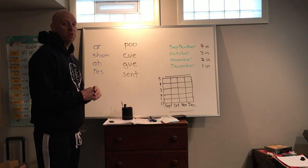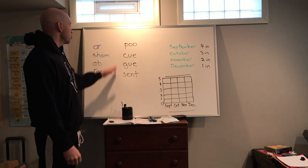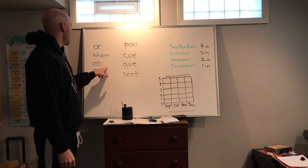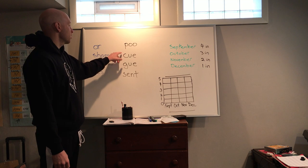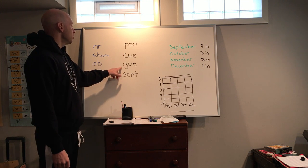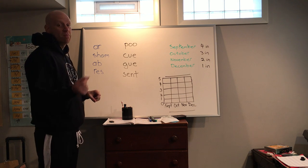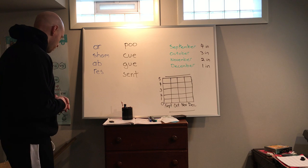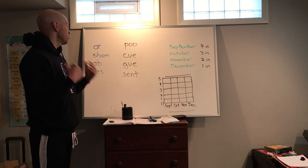So if you have a piece of paper, why don't you pause this video and write down two rows. A-R, S-H-A-M, A-B, R-E-S on one side. Poo, which you guys thought was hilarious, C-U-E, G-U-E, and S-C-E-N-T on the other side. And then we're going to match these things up. We're going to clap them out and then we're going to match them up. So pause the video, write them down, and start it back up.